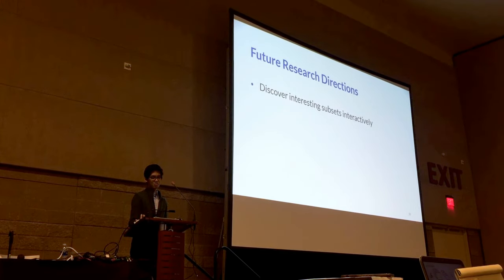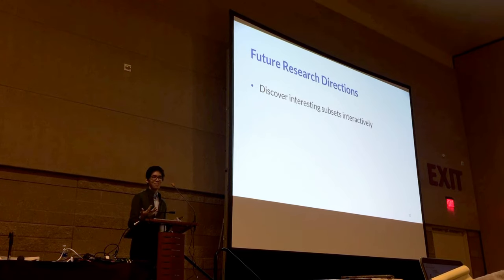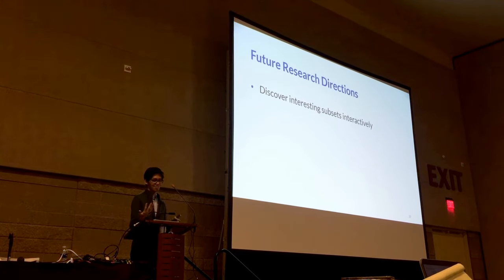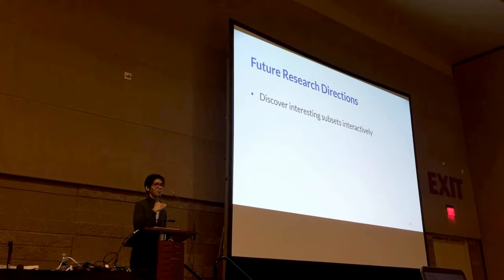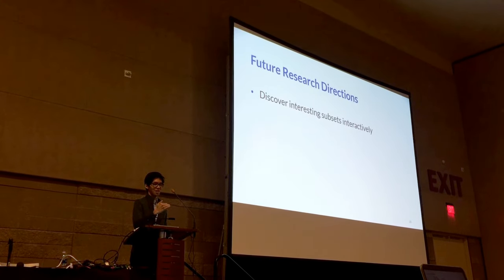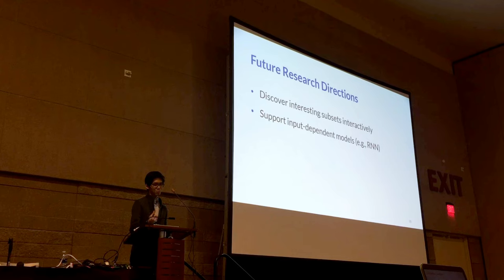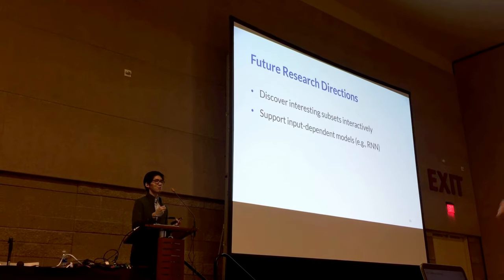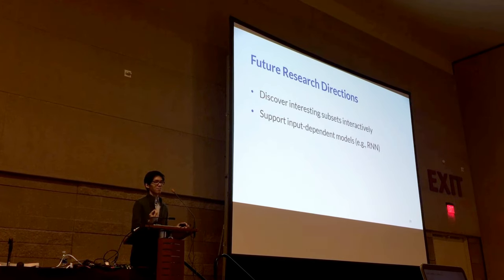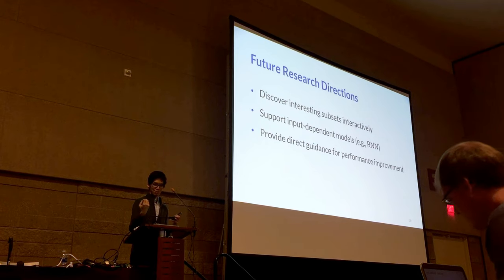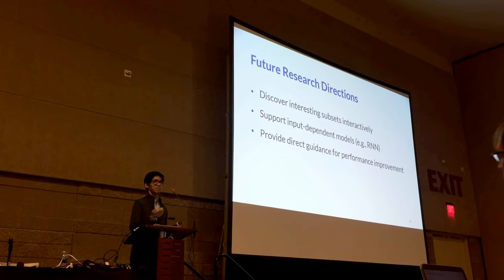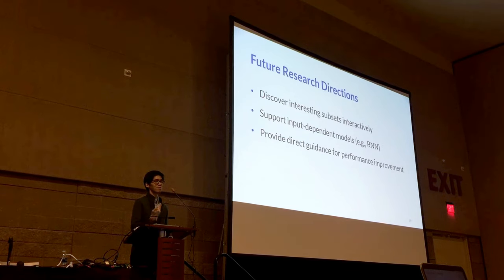There are interesting future research directions. While Activist enables users to manually define subsets in many ways, it would be interesting to recommend subsets users should look at for interactive exploration. It would also be interesting to support models whose number of neurons depends on input data size, and to provide actionable insights about how users can further improve their models.